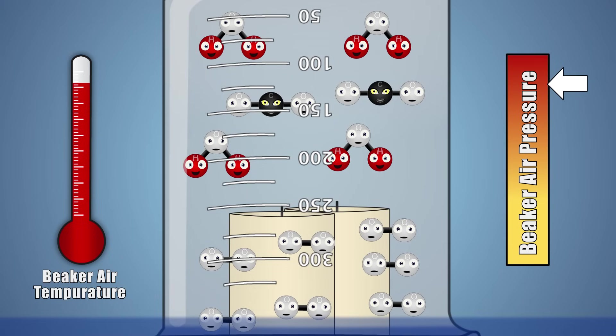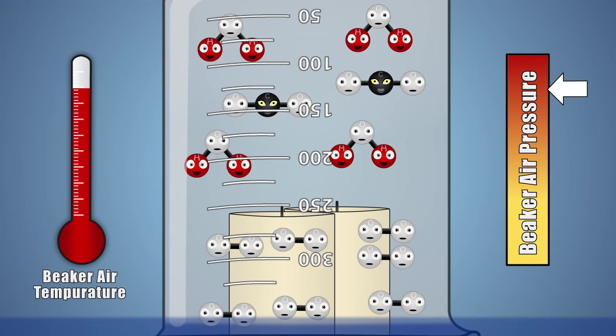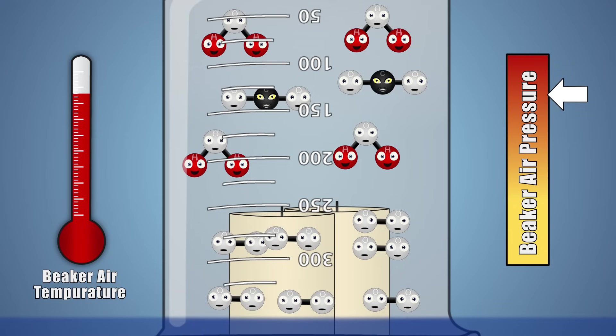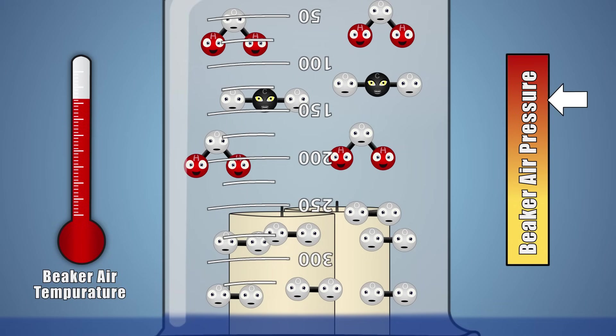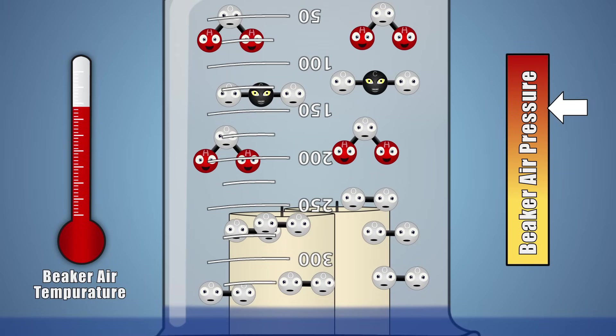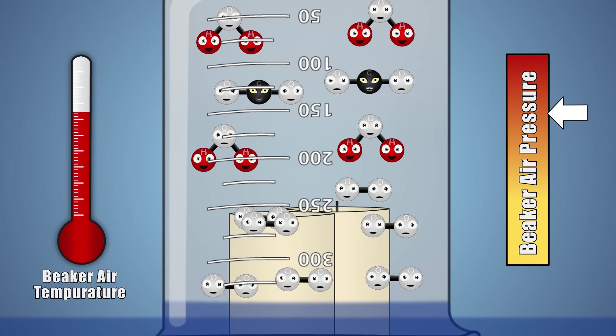Once the flame is extinguished, the air molecules under our beaker begin to cool off, dropping in temperature and losing their excitement. This causes the amount of pressure our air molecules are exerting on the sides of our beaker and the water at its base to drop.